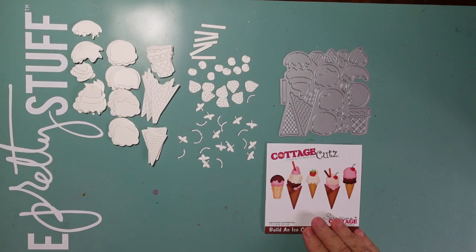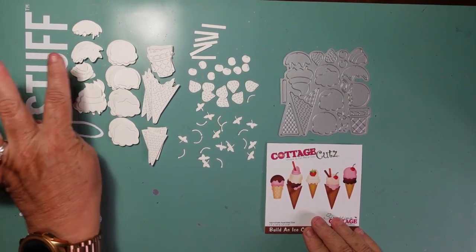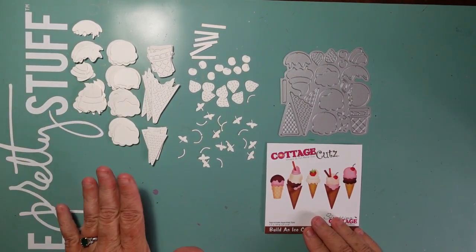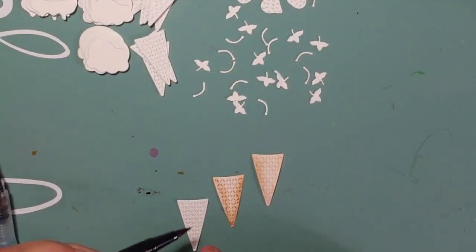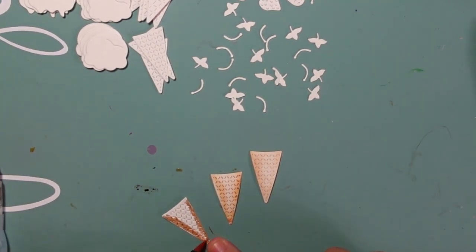Here's a look at the Build an Ice Cream die. I cut several of these out using Canson watercolor paper, so I have tons of die cuts for future projects.